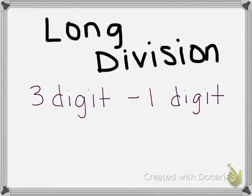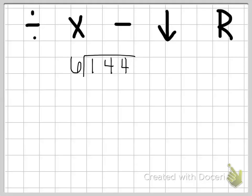In this video we're going to continue looking at long division, but this time we're going to be dividing a three-digit number by a one-digit number. The steps are the same. We still have our long division family to help us remember: divide, multiply, subtract, bring down, and then either repeat or find the remainder. The only difference is that we're going to be repeating one additional time compared to a two-digit number.